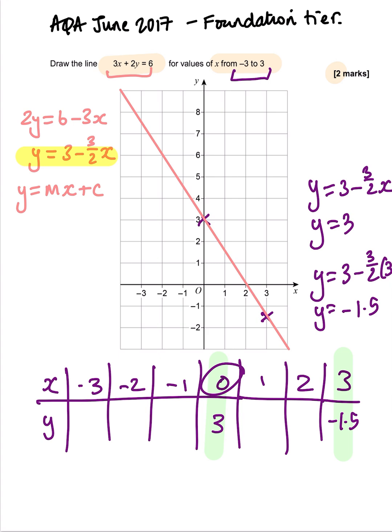Remember, we don't need to work out all of these remaining values. Because we only need 2 to draw a straight line. And that's our straight line drawn for 3x add 2y equals 6 for 2 marks.